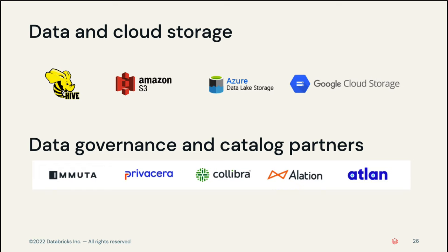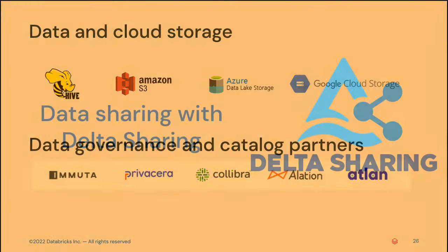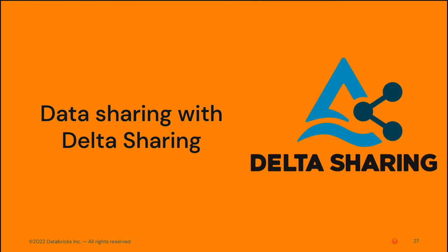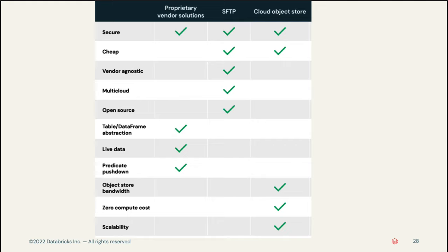Unity Catalog integrates with existing tools to help you future-proof your data and AI governance. Next, we'll discuss data sharing with Delta Sharing. Data sharing is an important aspect of the digital economy, but data sharing is difficult to manage. Existing data sharing technologies come with several limitations: traditional technologies do not scale well and often serve files offloaded to a server; cloud object stores operate on an object level and are cloud-specific; and commercial data sharing offerings often share tables instead of files.